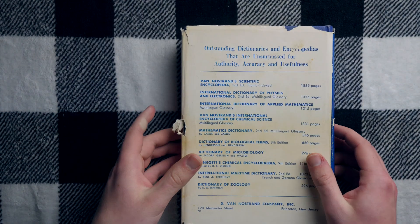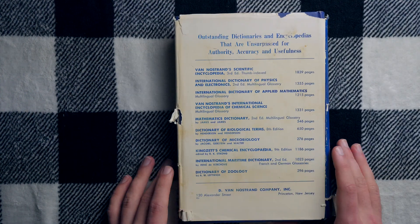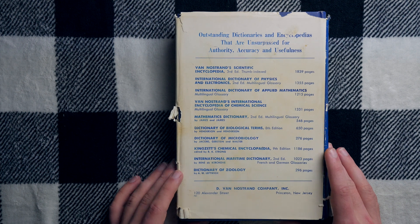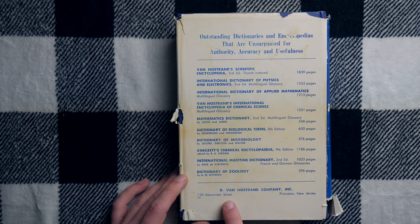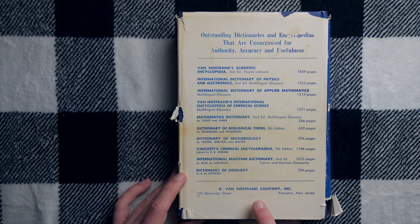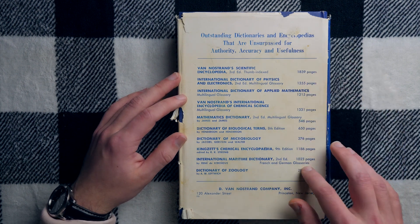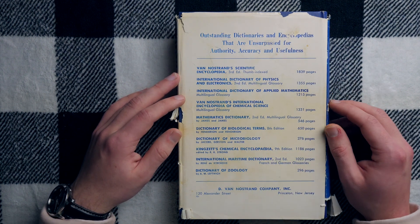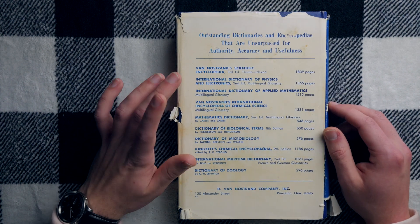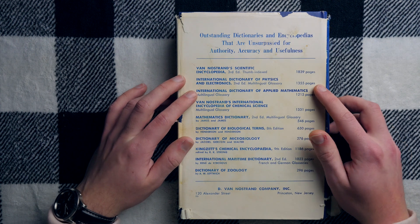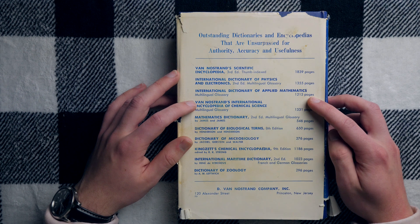On the back of the book, you can see I've got the dust cover here. It's in slightly rough shape, but it's okay. It's still all together in one piece. It looks like there are some other dictionaries by the same publisher, the D. Van Nordstrand Company. You've got Scientific Encyclopedia, Dictionary of Physics and Electronics, An International Dictionary of Applied Mathematics.